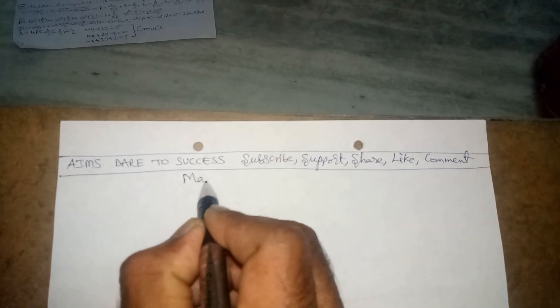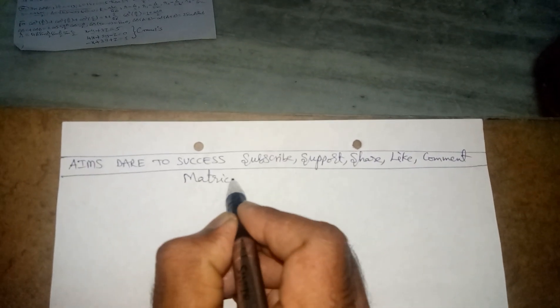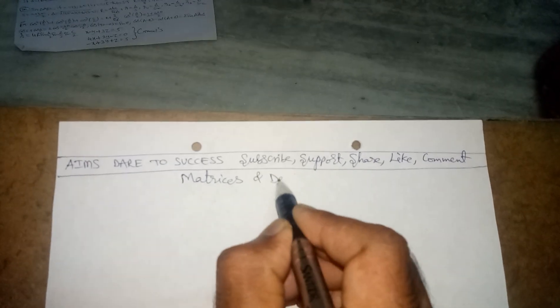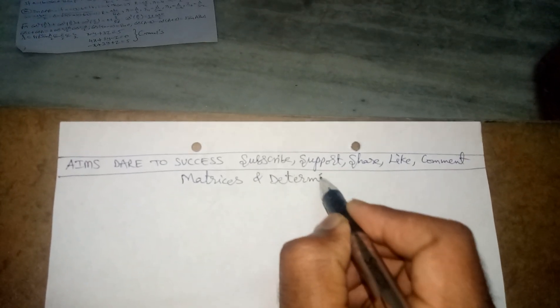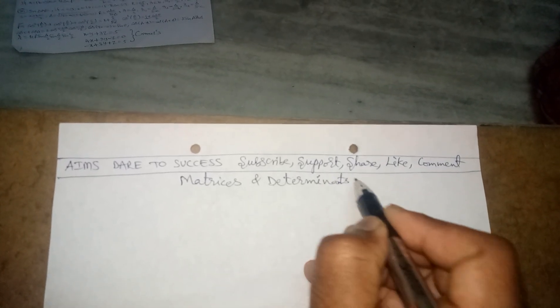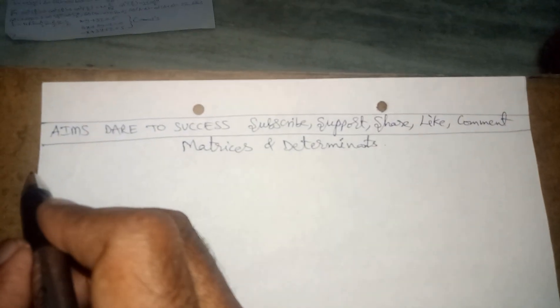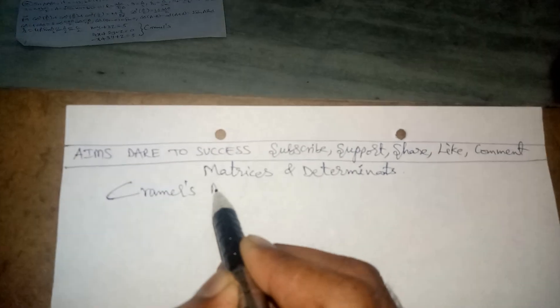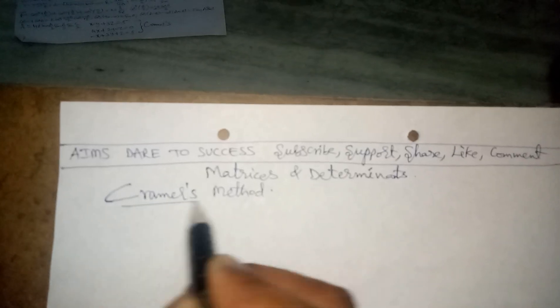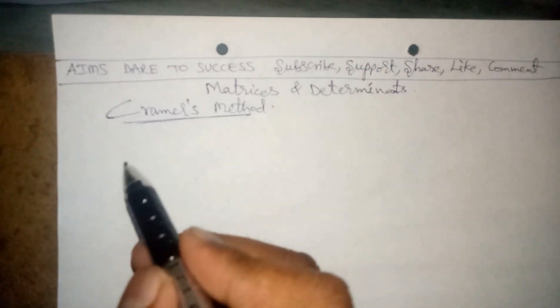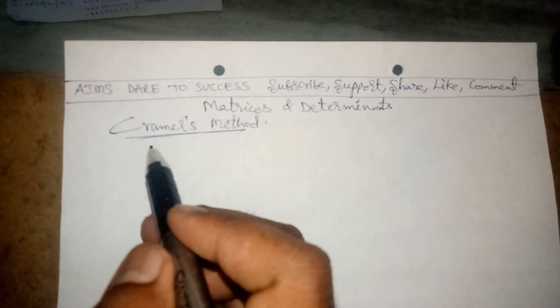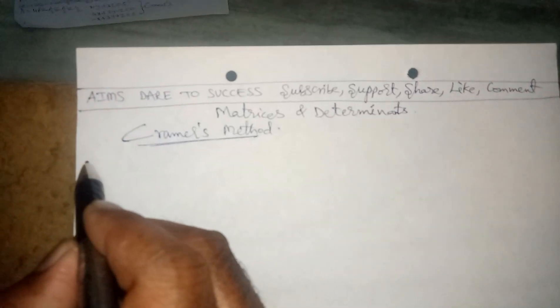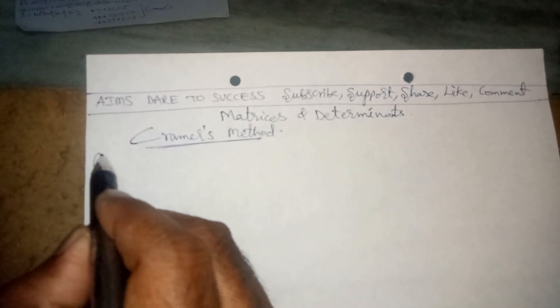Hi my dear friends, namaste. My name is Krishna Rady. Today we are discussing matrices and determinants. This method is very easy and important — it is called Cramer's Rule or Cramer's method. This is an easy method.